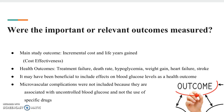We also looked at whether the authors mentioned important relevant outcomes. The main study outcome was the incremental cost in life years gained, which is a measure of cost-effectiveness. They also measured health outcomes including treatment failure, death rate, hypoglycemia, weight gain, heart failure, and stroke. While these are good outcomes to measure, it may have also been beneficial to include effects on blood glucose levels as a health outcome, since we are studying anti-diabetic medications.